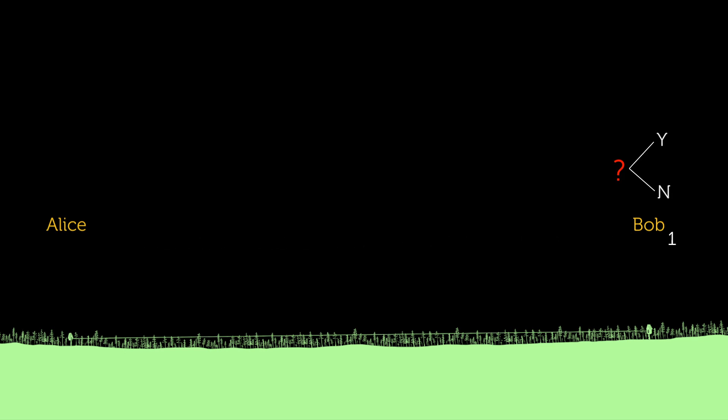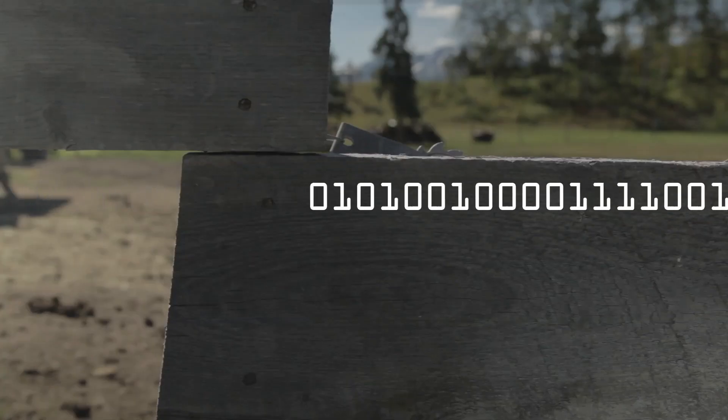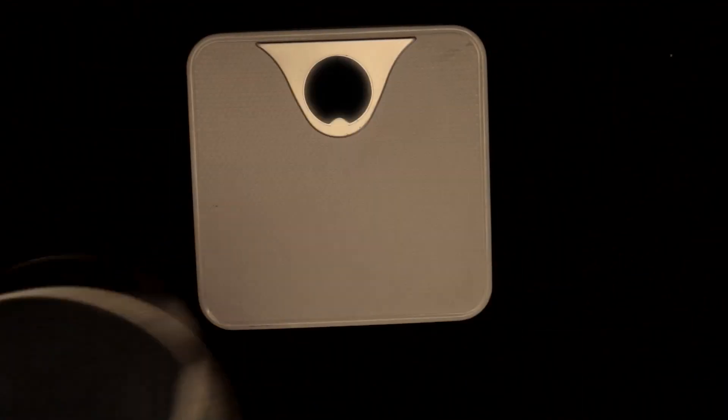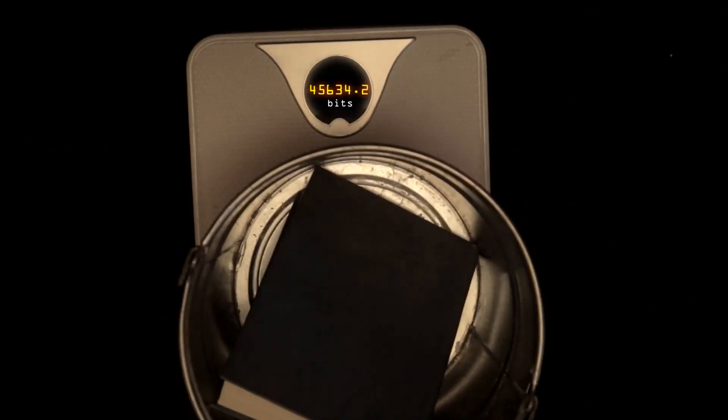And thanks to Shannon, the bit, which is the unit of entropy, is adopted as our quantitative measure of information or measure of surprise.